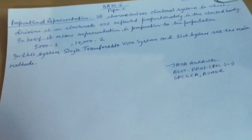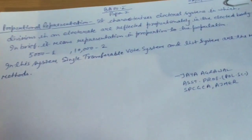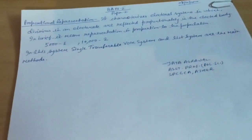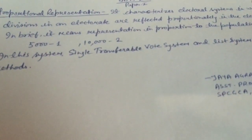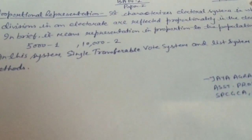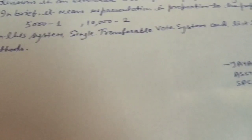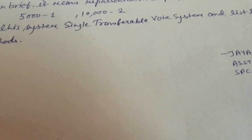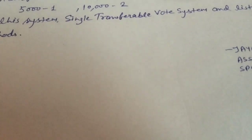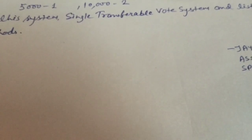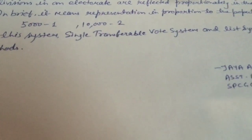Now we will talk about anupati pratinidhitwa, that is proportional representation in Hindi. If we decide that 5,000 people elect one representative, then in proportion, 10,000 people will elect two representatives, and so on proportionally.